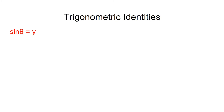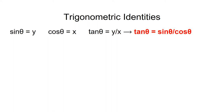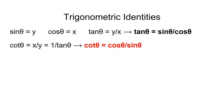Now we turn to trig identities, which are very useful in algebra, calculus, and other branches of mathematics. On the unit circle, the sine of theta is equal to y, the cosine of theta is equal to x, and the tangent of theta is equal to y over x. We can substitute sine theta for y and cosine theta for x, and we then obtain the identity: tangent of theta is equal to sine of theta over cosine of theta. When we consider cotangent of theta, we see that this is the reciprocal of tangent of theta, so cotangent of theta is equal to cosine theta over sine theta.